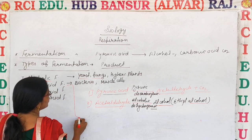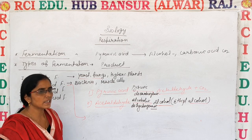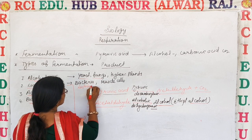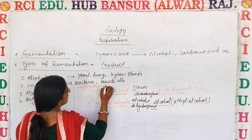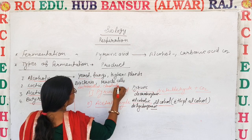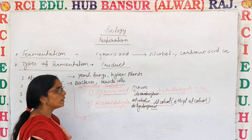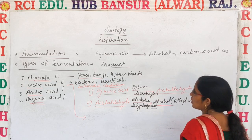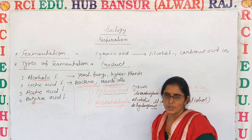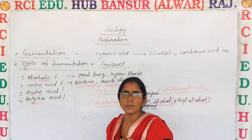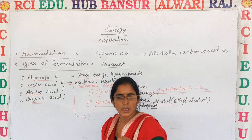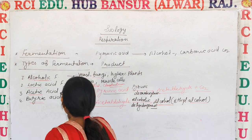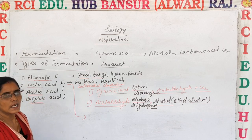Second is lactic acid fermentation. The bacteria involved are Lactobacillus and Clostridium, as well as muscle cells. When an athlete is continuously running, aerobic respiration occurs but the oxygen requirement is very high and not fully met, so breakdown occurs in the lack of oxygen.